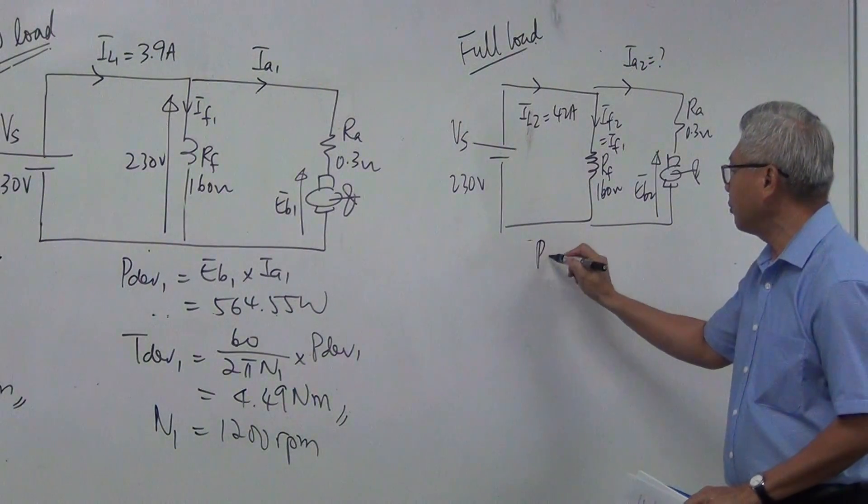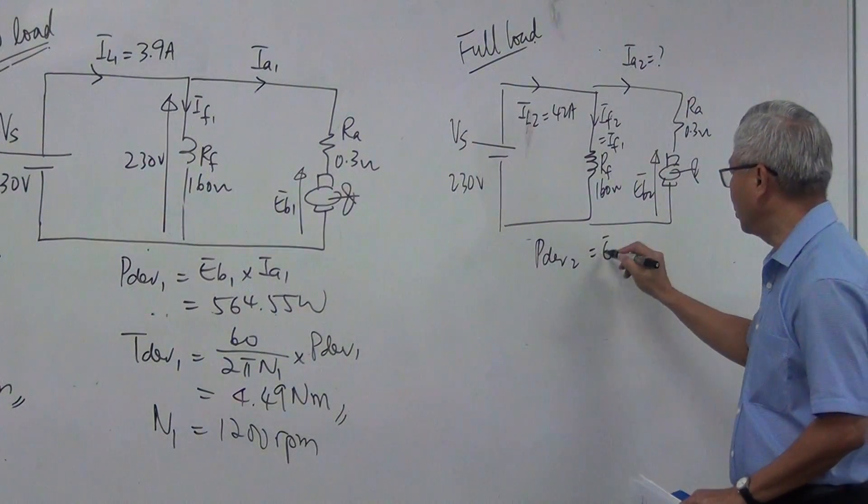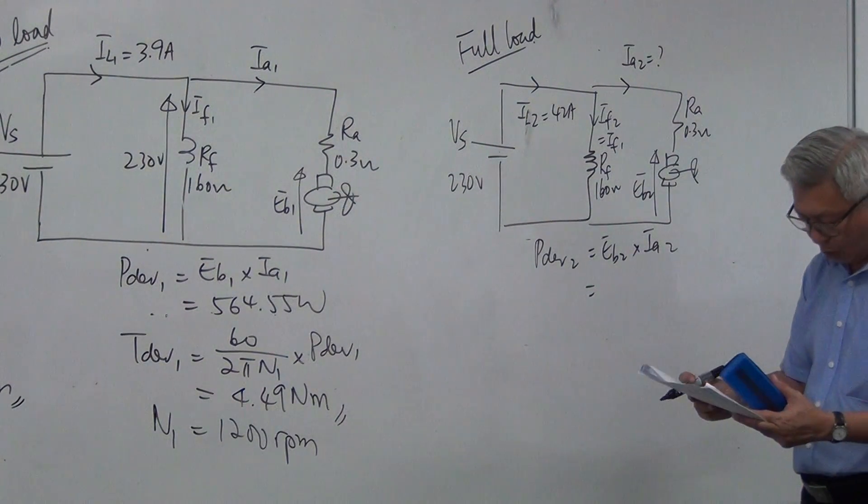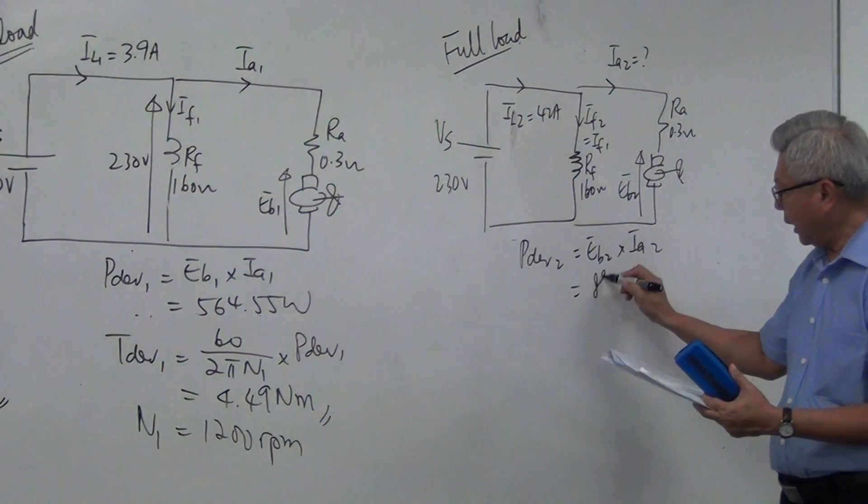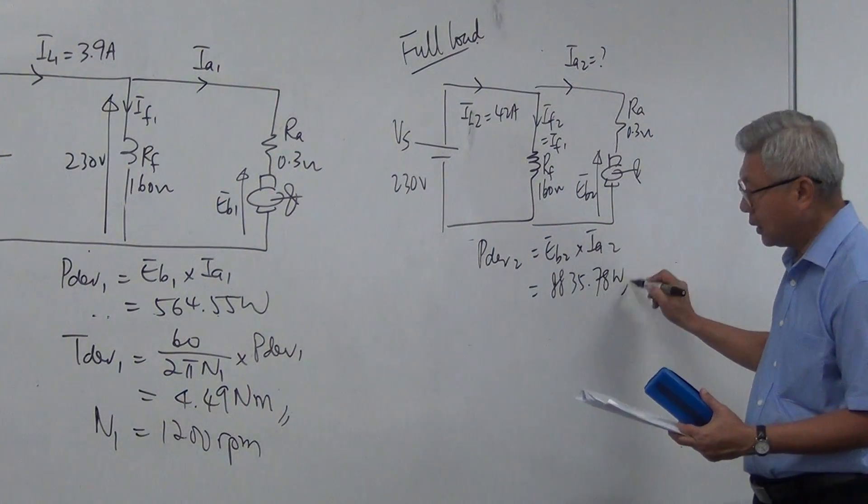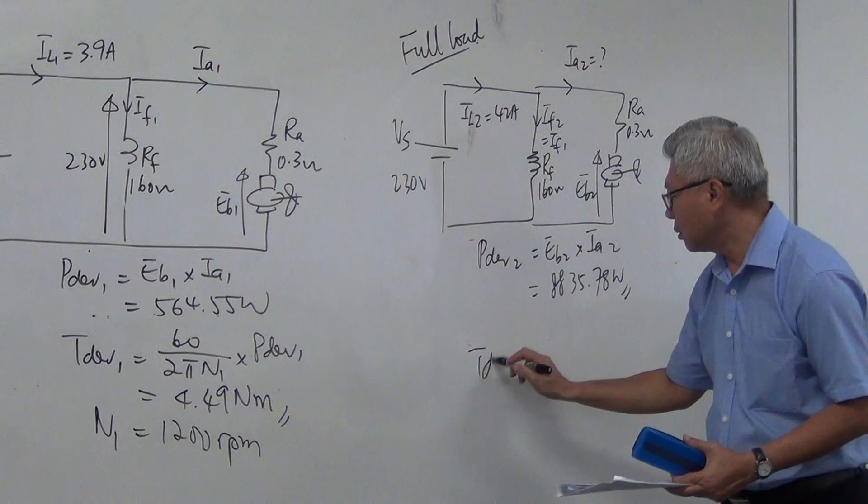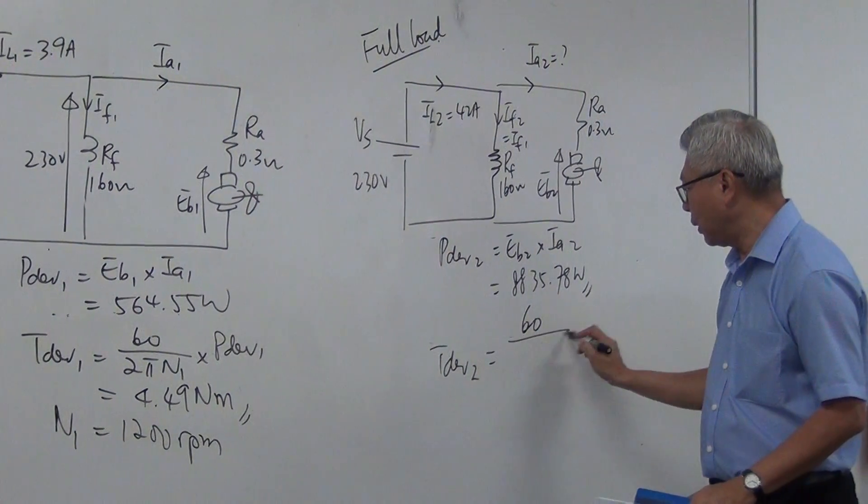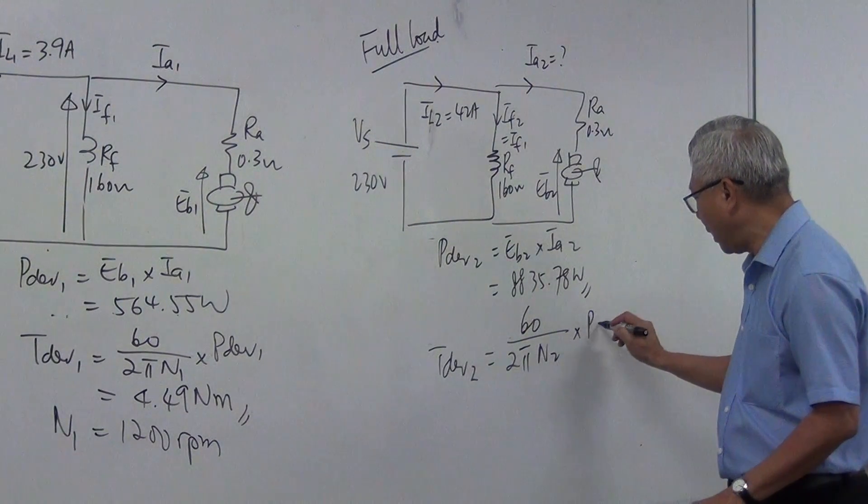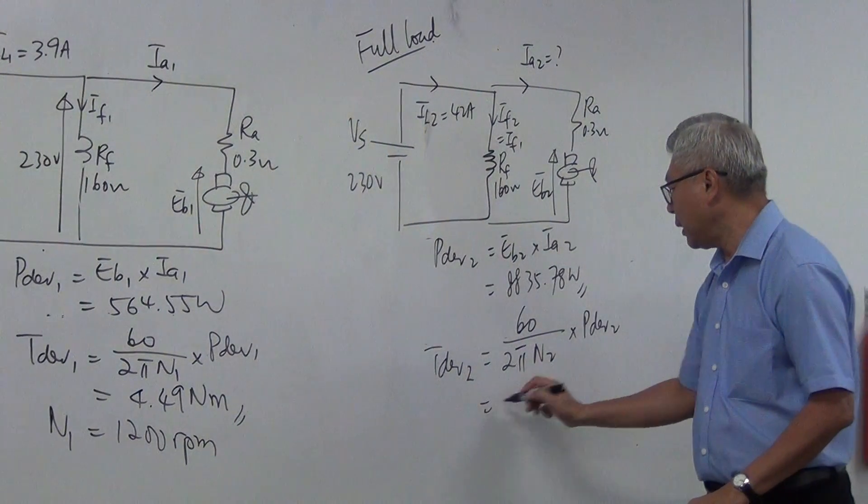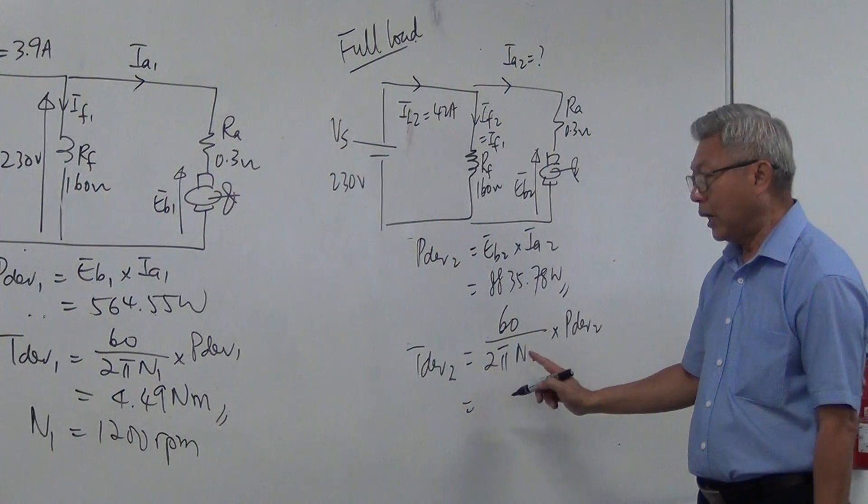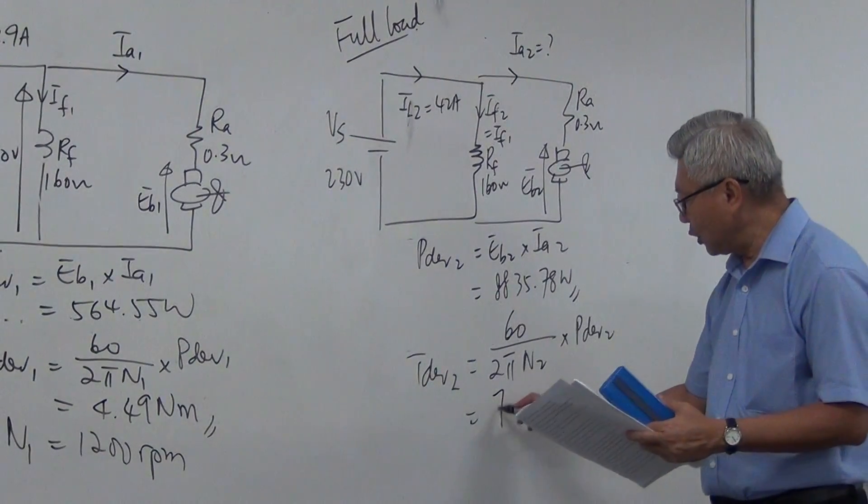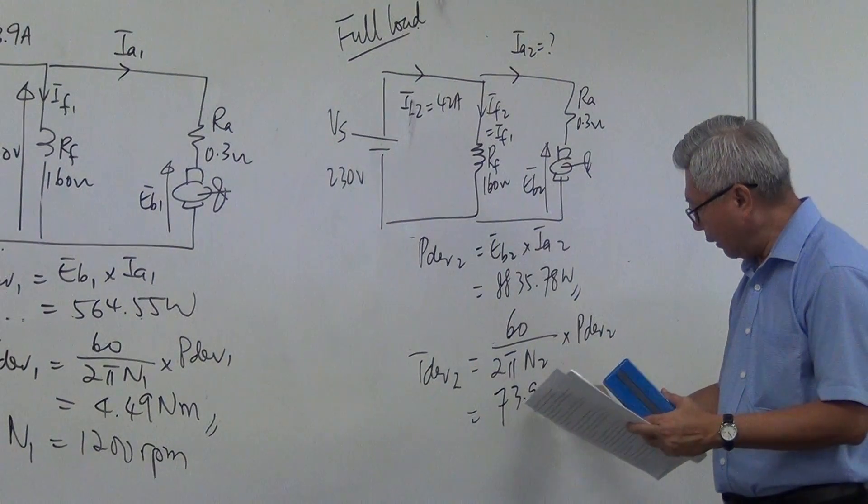Let us show you that the torque is a higher value now. So again, power developed 2 is Eb2 times Ia2. Using the value that we have calculated just now. And that is equal to 8835.78 watt. And torque is equal to 60 over 2 pi N2 multiplied by power developed 2. And N2 is the one that I calculated just now. 1140.17. Power developed is this value. And the torque now is 73.95 Nm.